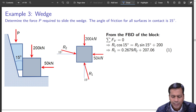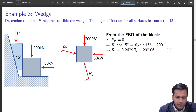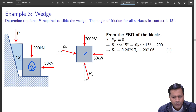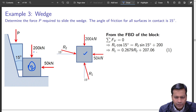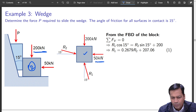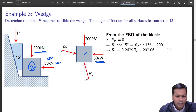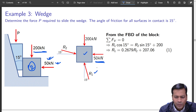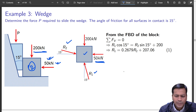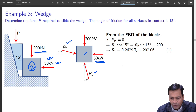Let us begin by drawing the free body diagram first. When I look at block 2, the bottom block, I can identify all the forces acting on it. First, the weight acts downward — that will always be there. This force was given in the question itself, so it acts like this.